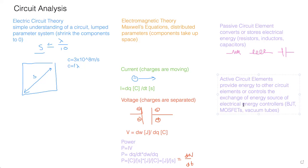Active circuit elements usually have three external pins. For BJTs it's the base, collector, and emitter. For MOSFETs it's the source, drain, and gate. What you need to know for EE 211 is the passive circuit elements, which contain basically linear relationships.